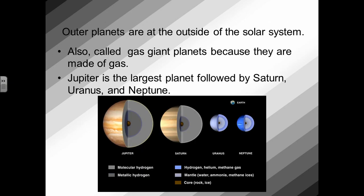Outer planets are the outside of our solar system, so they're farther away from the center. Outer planets are also called gas giants because they are made of gas. Looking at the picture below, you can see the different gases that make up each layer of the outer planets. You can tell that there are lots of hydrogen, helium, methane gas, ammonia, water, rock, and ice that form these outer planets.